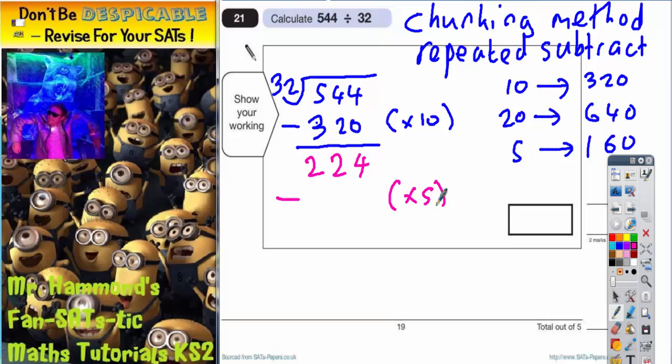So I'm going to subtract 5 chunks this time, which is 160. So it's going to be 224 subtract 160. 4 take away 0 is 4, 2 take away 6 we can't do, so we're going to have to borrow 1. 12 take away 6 is 6, 1 take away 1 is 0. So now we're down to just 64.